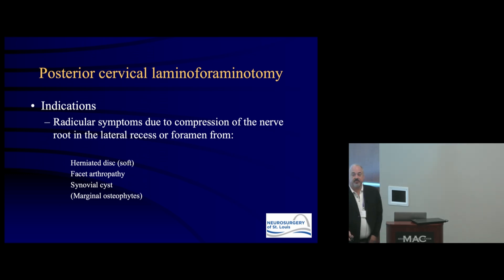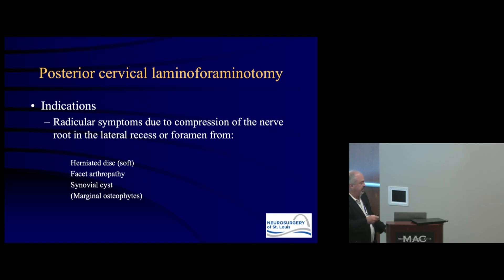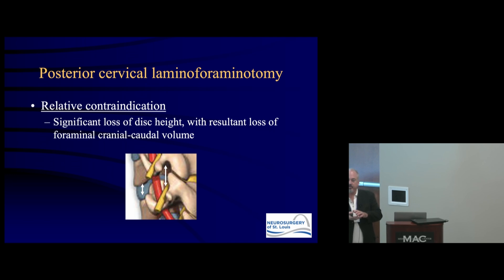What are the indications for foraminotomy versus ACDF? Compression of the nerve root in the lateral recess or foramen from a soft disc is a great indication. Facet arthropathy is a great indication. Synovial cyst is a great indication. Marginal osteophytes are harder because it's difficult to remove those osteophytes on the far side of the nerve from a posterior approach — those are better treated anteriorly. A relative contraindication is significant loss of disc height, as you may not fully decompress the nerve root.